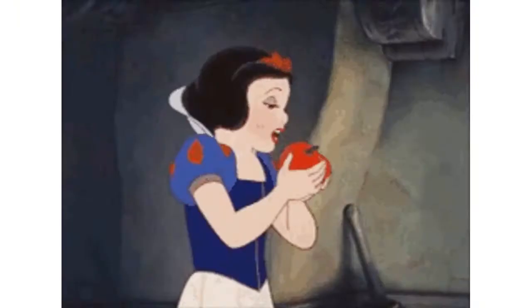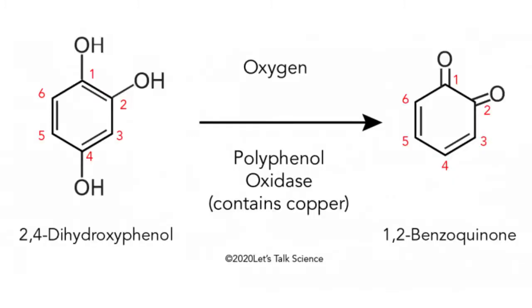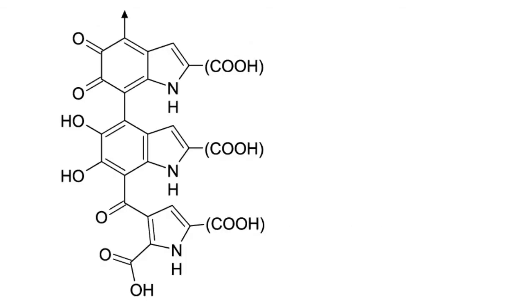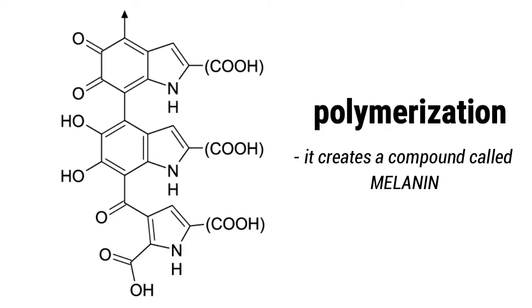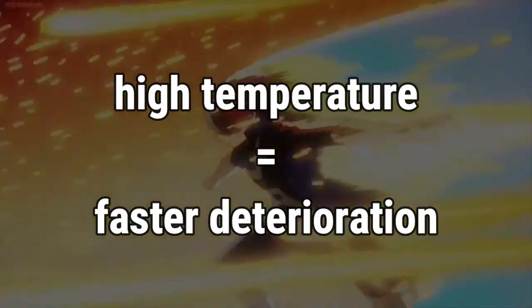Let's use an apple as an example. PPO and polyphenols are found inside apple cells. Cutting or biting an apple exposes its cells to air, which contains oxygen, triggering an oxidation reaction that causes enzymatic browning. When polyphenols mix with PPO and oxygen, they create a compound called orthoquinone. The individual molecules of orthoquinone then connect together through a process called polymerization, creating a compound called melanin, which causes the apple to look brown.